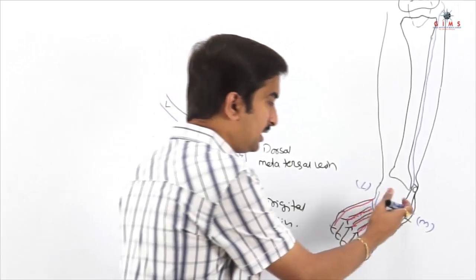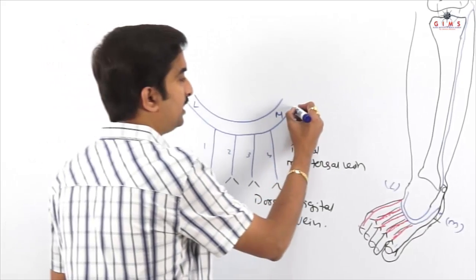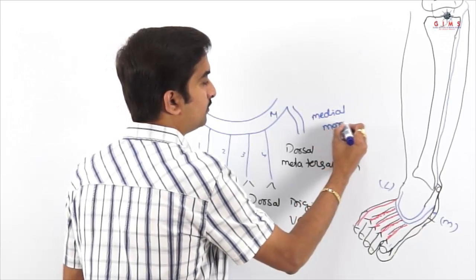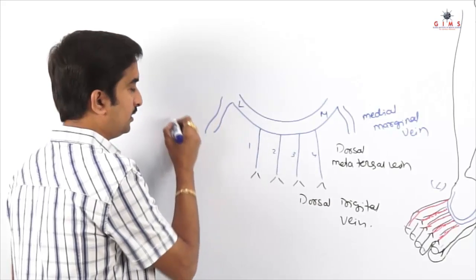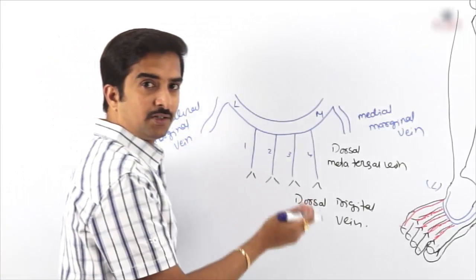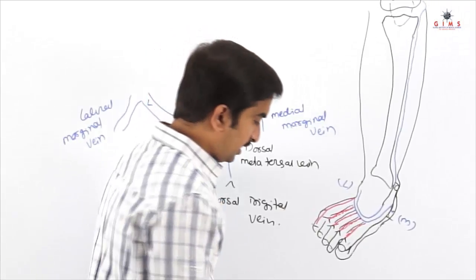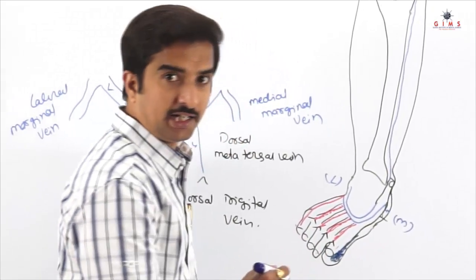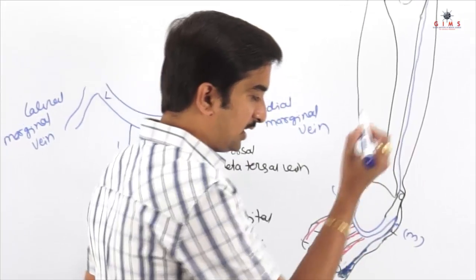At the medial and lateral ends, the dorsal venous arch receives two veins on either side. On the medial end it receives the medial marginal vein, and on the lateral end it receives the lateral marginal vein. The medial marginal vein drains from the medial aspect of the great toe.